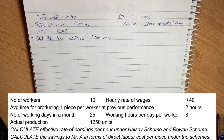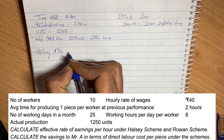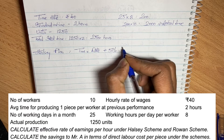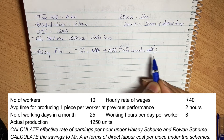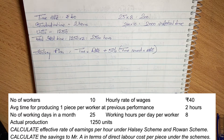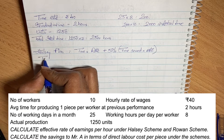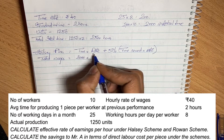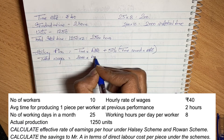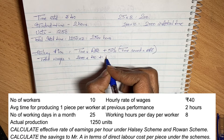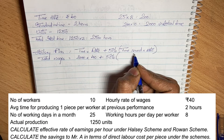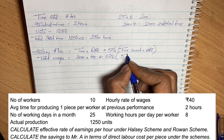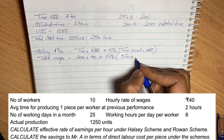First, we will calculate under the Halsey plan. The Halsey plan formula is: Time Taken into Rate, plus 50% of Time Saved into Rate. Workers saved 500 hours. So wages = actual time into rate = 2,000 into 40 = 80,000 rupees. The bonus is 50% of time saved into rate = 50% of 500 into 40.